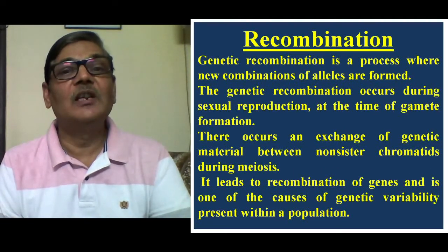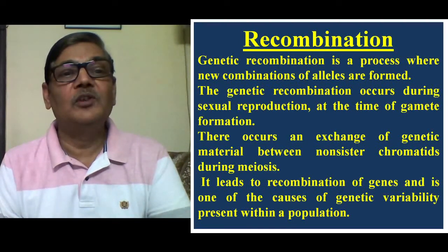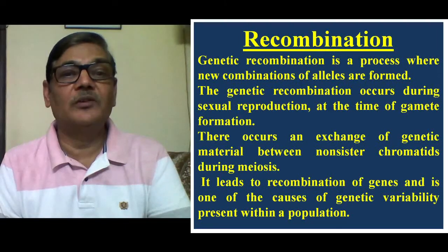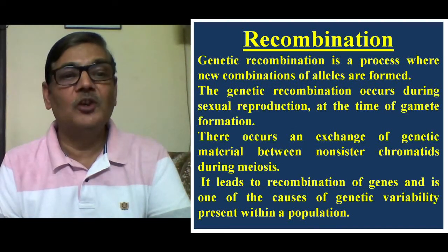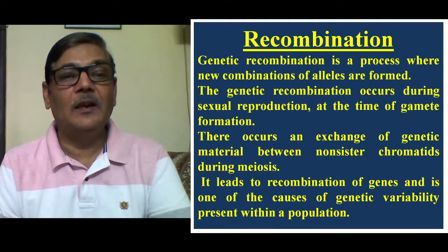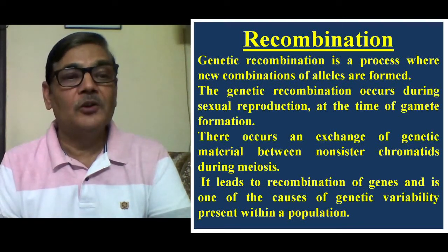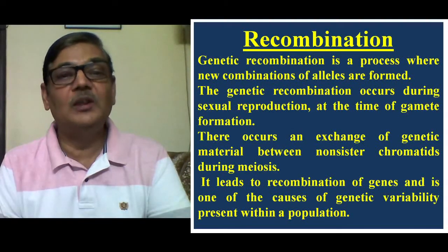The next factor is recombination. Genetic recombination is a process by which new combinations of alleles are formed. Genetic recombination occurs during sexual reproduction at the time of gamete formation. There occurs an exchange of genetic material between non-sister chromatids of homologous chromosomes during meiosis — a process known as crossing over. Crossing over produces new combinations of genes, and such new combinations make raw materials for evolution to act upon, leading to genetic variability present within a population.